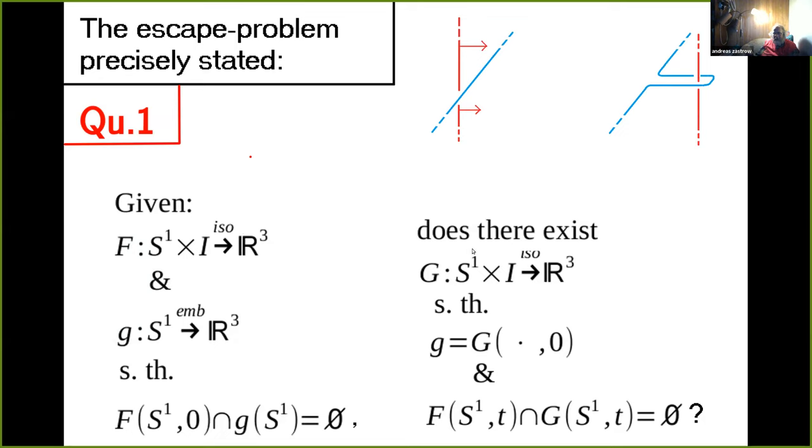The question is, can you extend this map small g to a map capital G, which also starts to make the second circle wandering around in three space, so that they keep disjoint for all of the time. The naive picture on top of the slide: the red string is part of one circle, it is moving, it is going to hit the blue circle, and we have to do something to avoid that they are hitting.